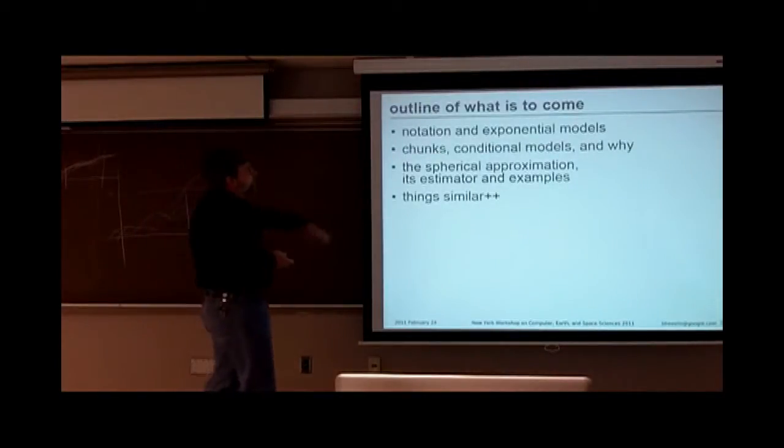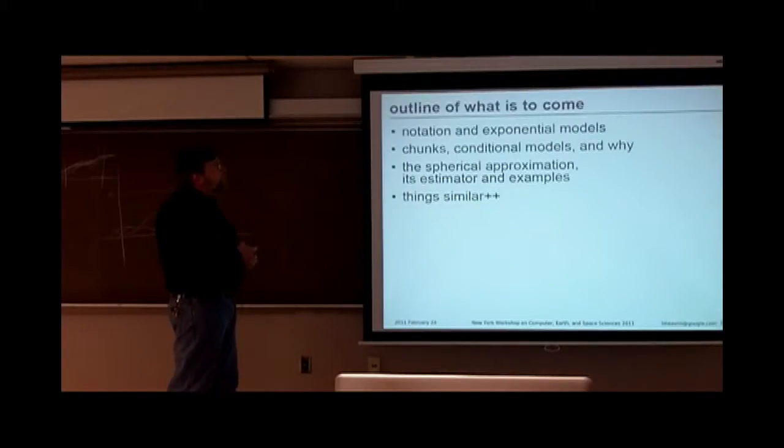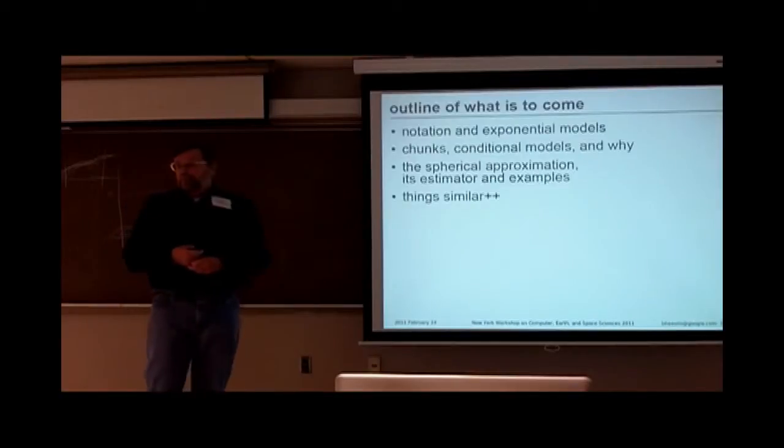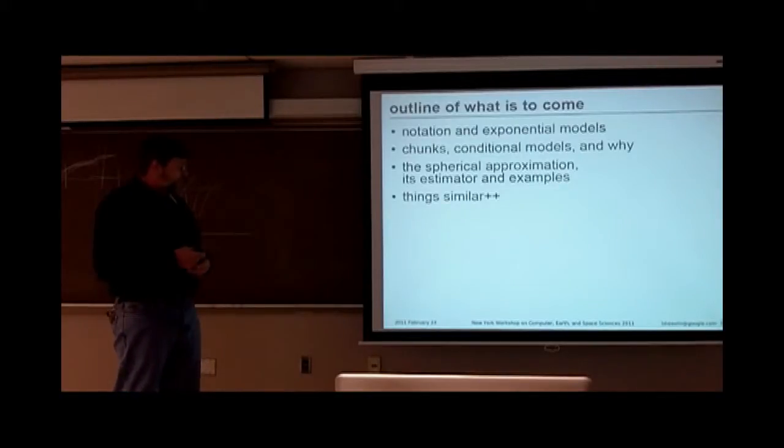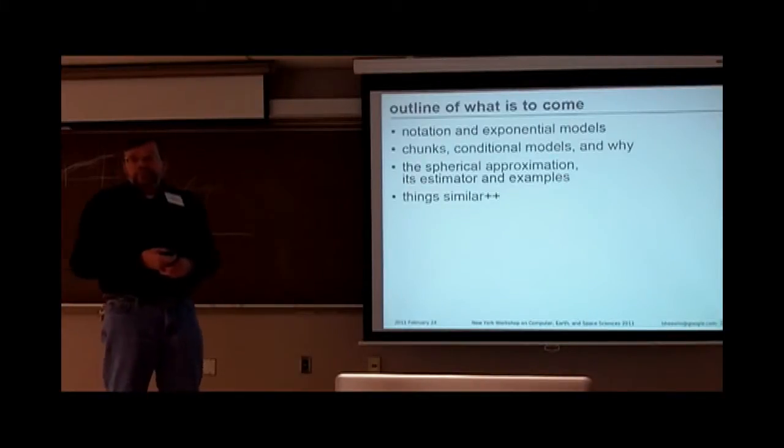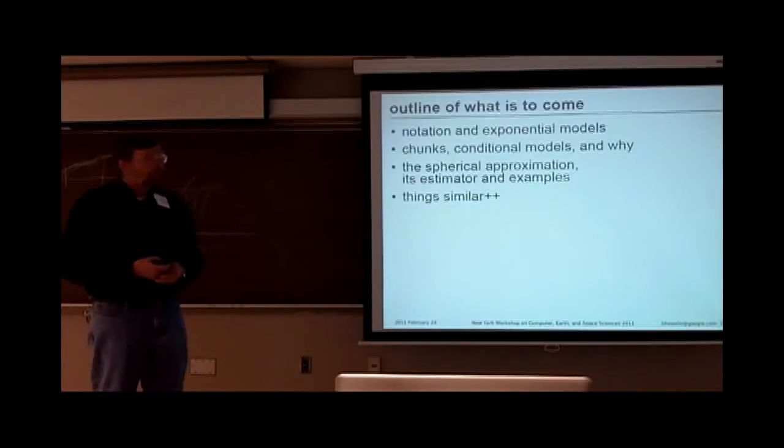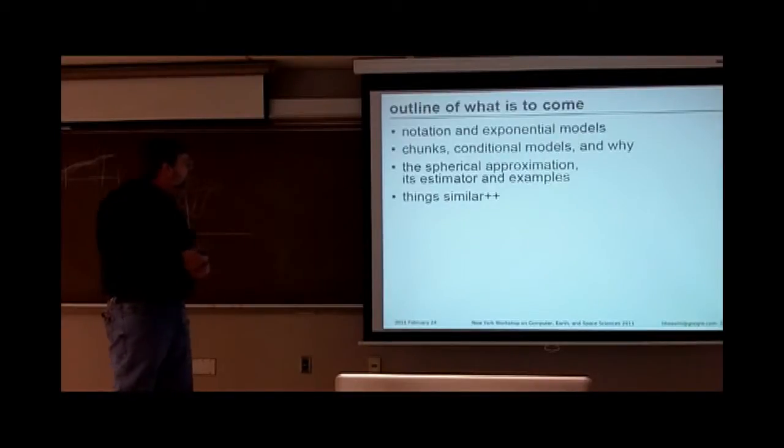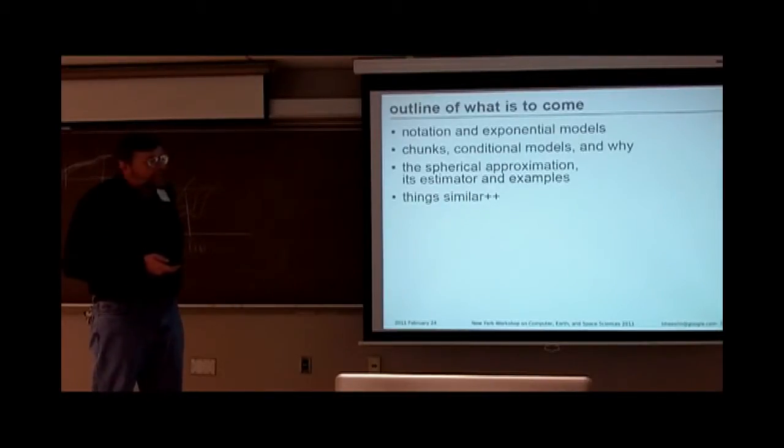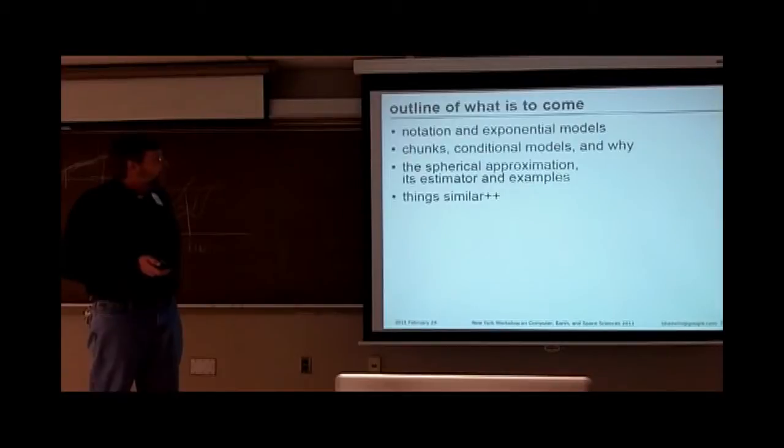So here's the general outline. There's going to be some notation, and the simple models are the exponential family. The second bullet starts introducing some of the meat with conditional models, and what I'm calling chunking here. Chunking has a lot of synonyms, but this is one of these cool Anglo-Saxon words. The spherical approximation that appears, and then toward the end, I compare it to some other four-letter acronyms.